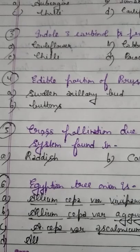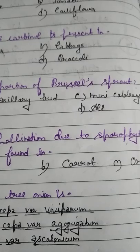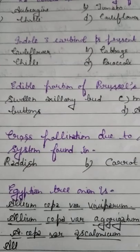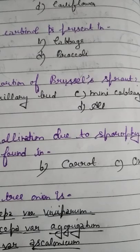Question number 4. Edible portion of Brussels sprout — it is a cold crop. Options: A: Swollen axillary bud. B: Buttons. C: Miniature cabbage. D: All. The correct answer is all — these are all pseudonyms for the same edible portion. Swollen axillary bud, mini cabbage, and button are all names for the edible portion of Brussels sprout.